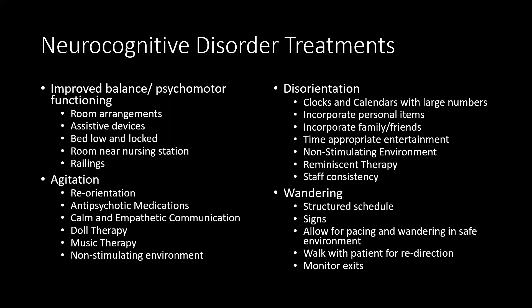For patients who wander, we allow pacing in safe environments. If they're wandering into other patients' rooms or trying to exit the unit, we walk with the patient to redirect them. We encourage a structured schedule and place signs labeling where things are — for example, a sign on the bathroom, since incontinence may result from difficulty finding the bathroom rather than an inability to use it. We also monitor exits if the patient is at risk for wandering out.